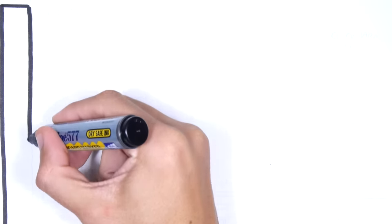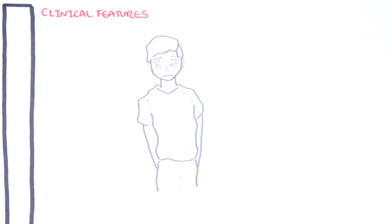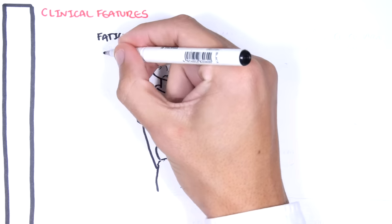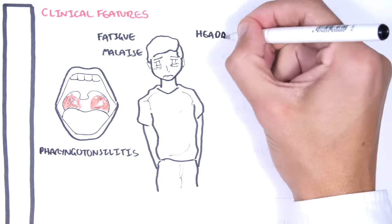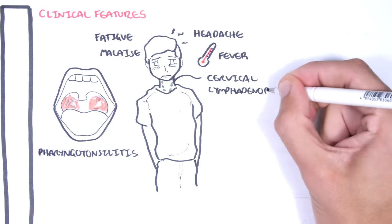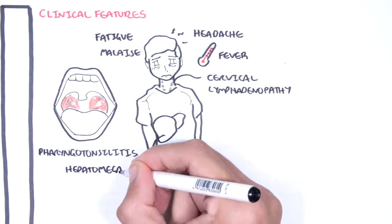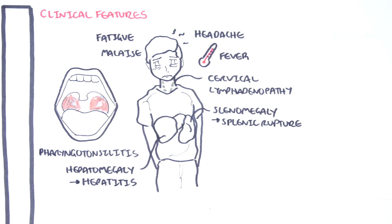In summary, the Epstein-Barr virus infection is usually asymptomatic. If it causes symptoms, it can be part of infectious mononucleosis. Infectious mononucleosis most often begins insidiously with fatigue and vague malaise, followed several days later by sore throat, pharyngotonsillitis, headaches, fevers, and swollen cervical lymph nodes. In some people there can be hepatomegaly, leading to hepatitis, and splenomegaly, which can lead to complications such as splenic rupture.